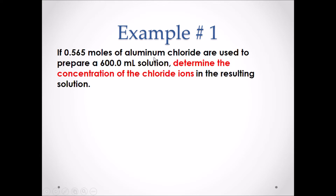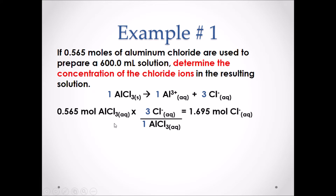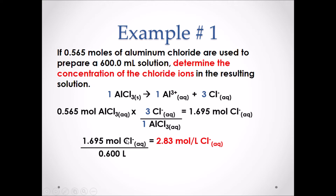Aluminum chloride is an ionic compound and it is also soluble, so first we have to write a dissociation equation. We can then find the moles of chloride ions using stoichiometry. We are starting with 0.565 moles of aluminum chloride and multiply by the three-to-one ratio to find the moles of chloride ions in solution. We then divide that mole value by the total volume in liters, giving us a molar concentration of 2.83 moles per liter of chloride ions.